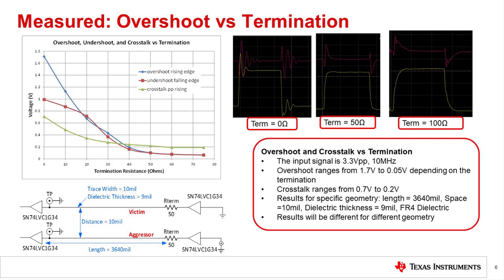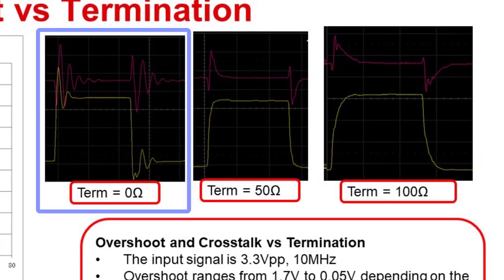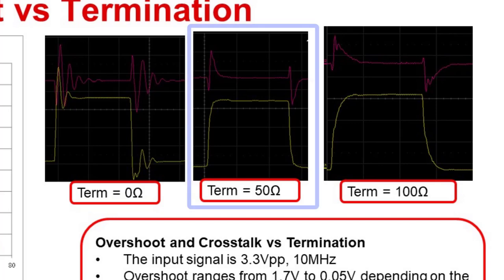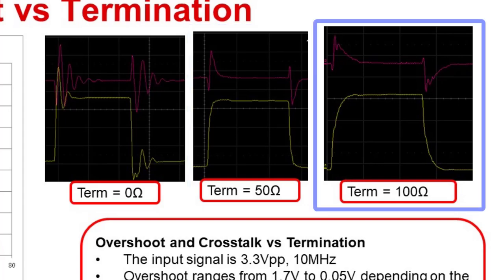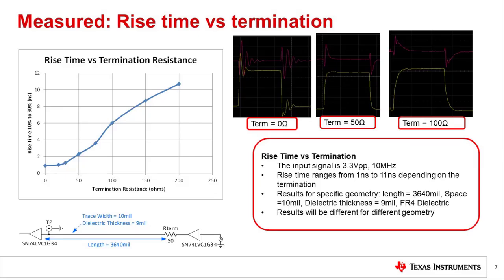The calculated impedance for this trace is approximately 66 ohms. Assuming the drive impedance is 10 ohms, the termination resistance should be 56 ohms. Looking at the oscilloscope waveforms, you can see that for a zero ohm termination resistance, there's a great deal of overshoot and ringing. The 50 ohm termination has a very fast rise time but no significant overshoot. The 100 ohm termination has a slow rise time. The graph summarizes the experimental results over a wide range of termination resistance. The experimental results show that the calculated trace impedance is approximately correct, as a 50 ohm termination produces optimal results. Earlier in the presentation, we mentioned that rise time is important to RF systems, as it determines how much high-frequency noise the square wave generates.